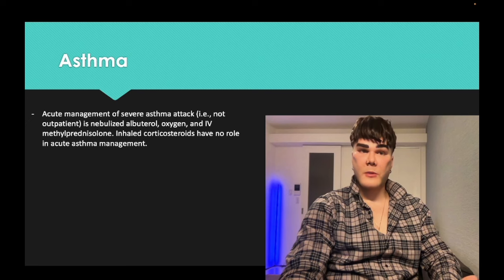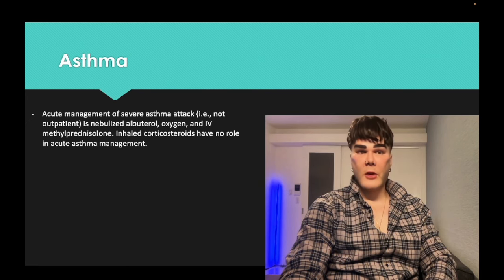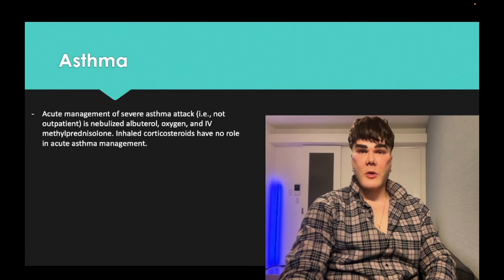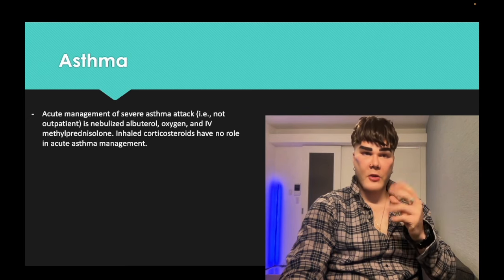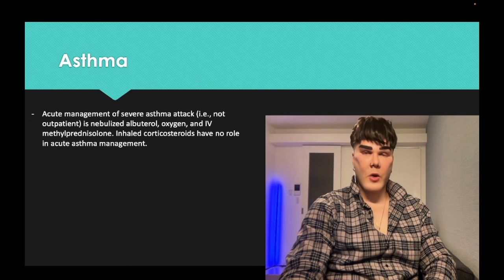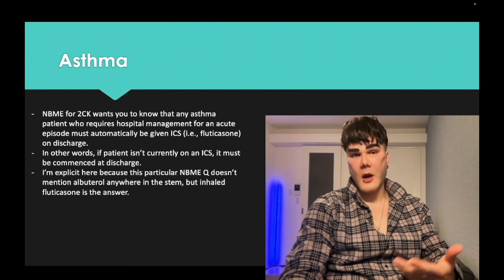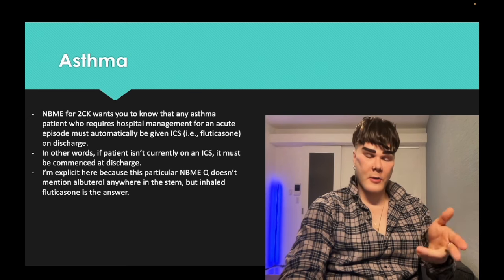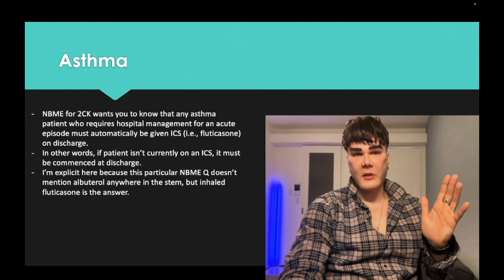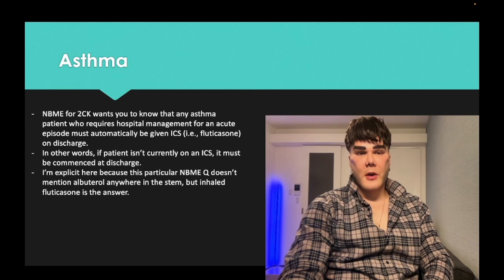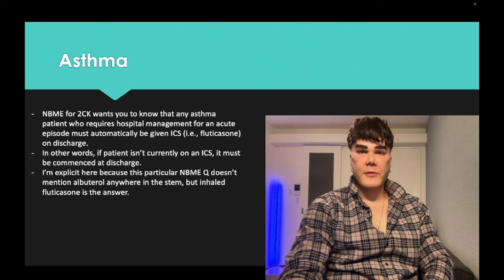Inhaled corticosteroids have no role in an acute asthma attack — ICS is given outpatient to prevent recurrences. In an acute attack, give the beta-2 agonist inhaler. Paramedics give nebulized beta-2 agonist with a face mask plus oxygen, then intravenous methylprednisolone — IV steroids — second. Oxygen is always number one: airway, breathing, circulation. If a patient has been hospitalized for asthma for any reason, ICS is mandatory in their regimen.